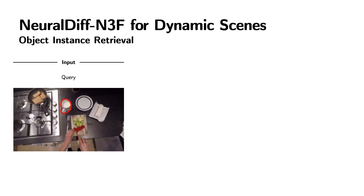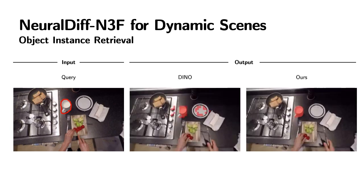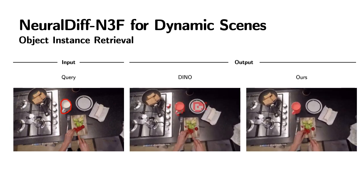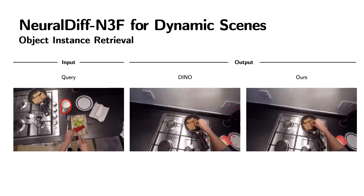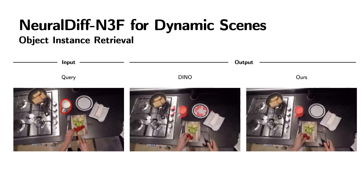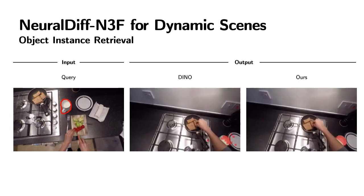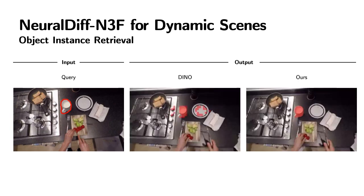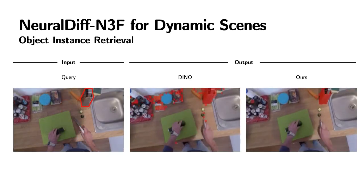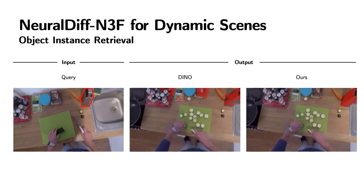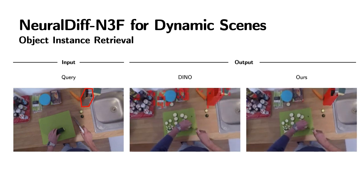We will look into example applications of NeuralDiff-NEFF. For the task of object retrieval, given a frame, we manually select an object mask and search for occurrences of the selected object in all other frames of the video by computing feature distances. We compare how well the features of the teacher network and the distilled features from NeuralDiff-NEFF perform at this task. We observe that our method results in significantly more accurate and coherent segmentations of the target object, thanks to the multi-view consistency of the distilled features. For example, DINO frequently confuses the cup with the plate, while our model retrieves the cup correctly in most cases and also captures the boundary of the cup more accurately. Similarly, DINO confuses the grater with many other parts of the scene, while the distilled features result in retrieval of the object with significantly higher precision.